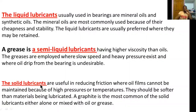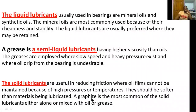Solid lubricants are useful in reducing friction where oil films cannot be maintained because of high pressures and temperatures. Solid lubricants should be softer than the materials being lubricated. Carbon graphite is the best example of a solid lubricant. These carbon graphite materials require no separate lubrication and are widely used in food processing industries.